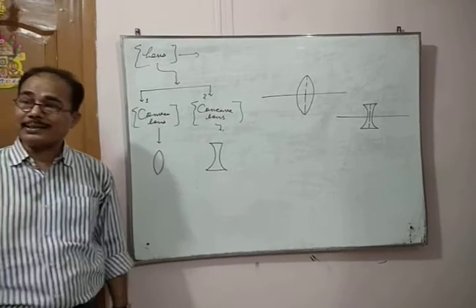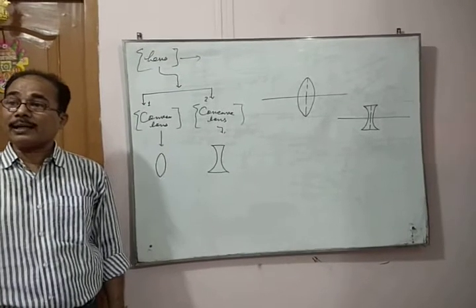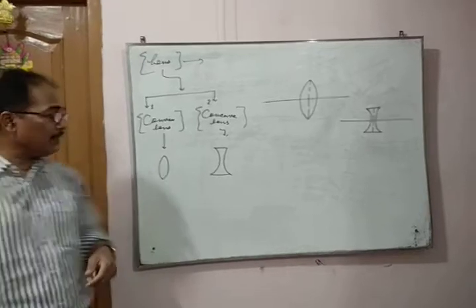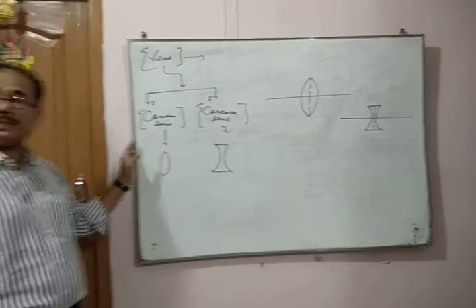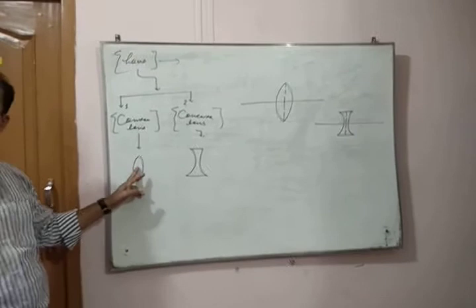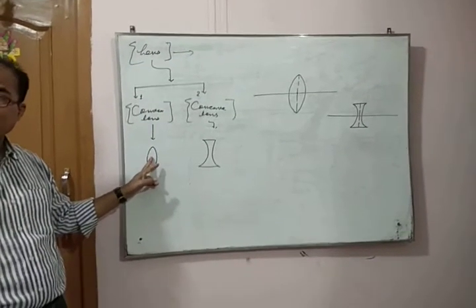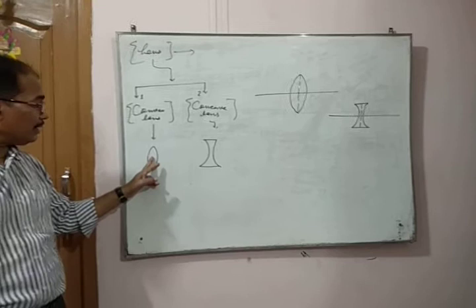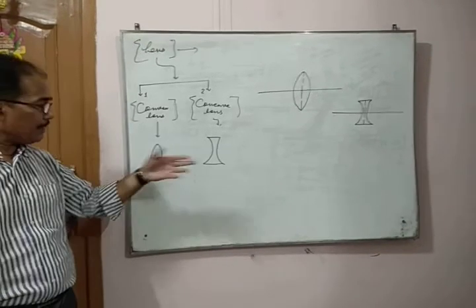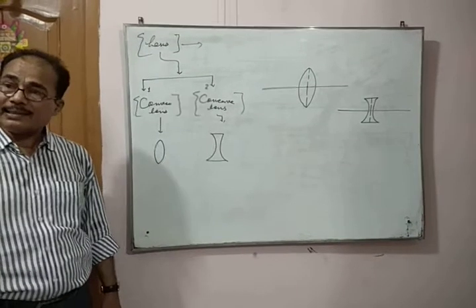Sometimes the question arises: why is convex lens called a converging lens? Rays passing parallel to the principal axis, after refraction through the lens, meet at a point. This is why convex lens is called a converging lens. Similarly, concave lens is called a diverging lens.